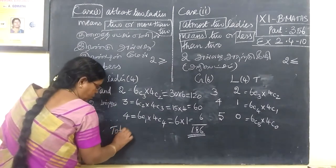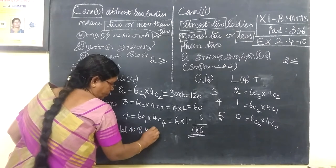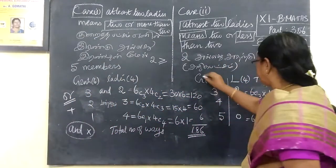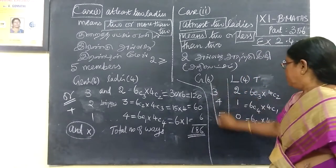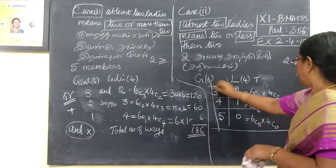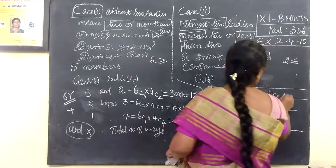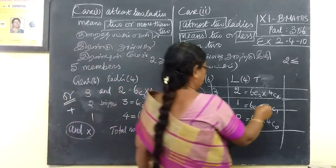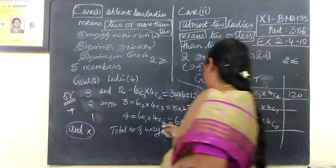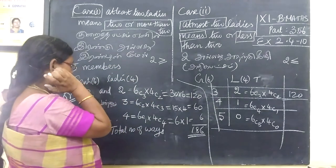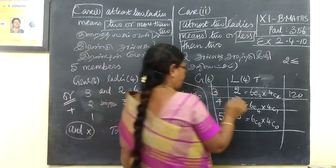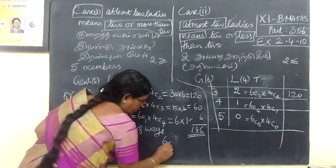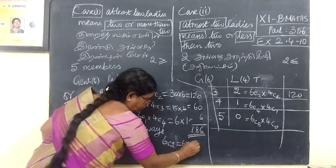Total number of ways. Arranging in certain ways. The value is C(6,3) into C(4,2), then C(6,4) into C(4,1). This is 120, then C(6,4). Then C(6,4) into C(4,1). C(6,4) equals outcome. C(6,2) is the value.